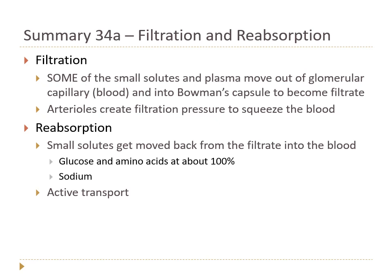In summary, we've talked about the first two jobs — filtration and reabsorption. Filtration is when we form the filtrate: we generate pressure in the glomerular capillaries which squeezes out plasma and small solutes into Bowman's capsule to become the filtrate or nascent urine. Some small solutes and plasma still stay behind in the blood. Then, since some things that moved into the filtrate are things we actually wanted to keep, job number two is reabsorption — we move glucose, amino acids, and some sodium back from the filtrate into the bloodstream via the peritubular capillaries using active transport and carrier proteins. We'll pick up with jobs three and four in part two of lecture 34.